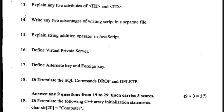Next question: explain any two attributes of the TH and TD tags. VALIGN is used to specify the vertical alignment of the cell. BGCOLOR is used to give the background color. COLSPAN is used to span a cell over two or more columns.